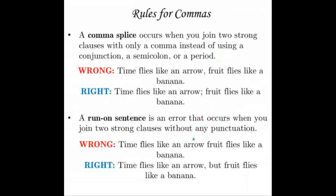A comma splice is a devious punctuation error that occurs when you join two strong clauses with only a comma instead of using a conjunction, a semicolon, or a period. Comma splices are bad — never do them. For example: "Time flies like an arrow, fruit flies like a banana" — that's a comma splice. Each part could be its own sentence. You must use either a semicolon ("Time flies like an arrow; fruit flies like a banana") or a comma plus a coordinating conjunction.